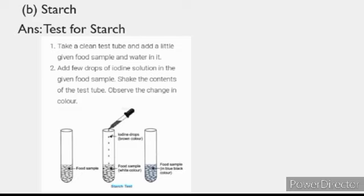What you have to do? Take a clean test tube and a little given food sample and water in it. Second point, add few drops of iodine solution in the given food sample. Shake the contents of the test tube. Observe the change in the color. There is a diagram also which shows the testing of starch. You have to draw that diagram also. There are three test tubes in which first test tube contains food sample. In the second test tube, iodine solution is being added to the food sample. And in the third test tube, a blue-black color develops. And this shows the presence of starch in the food item.